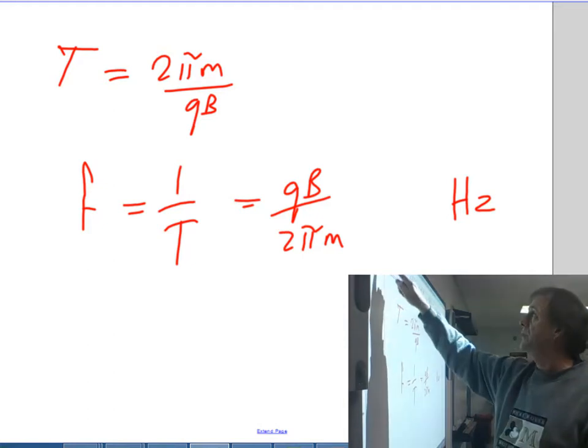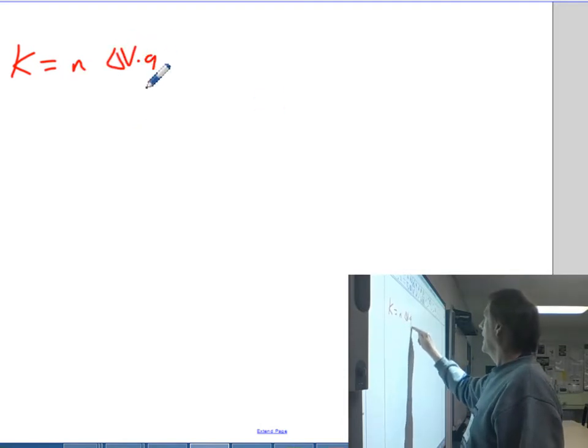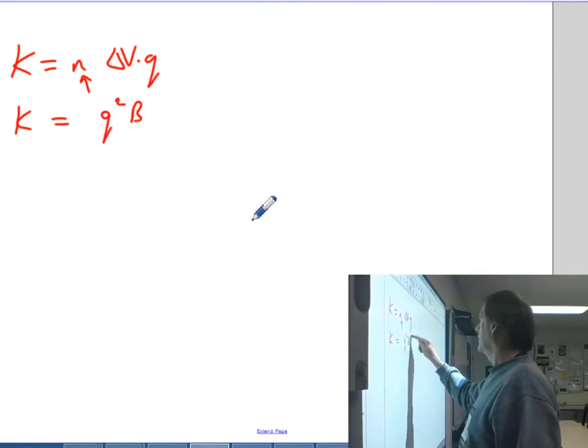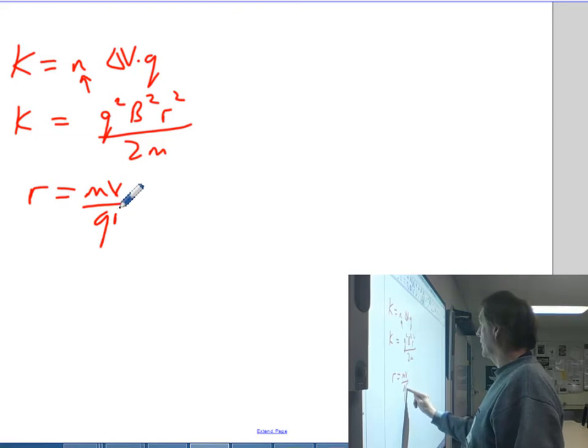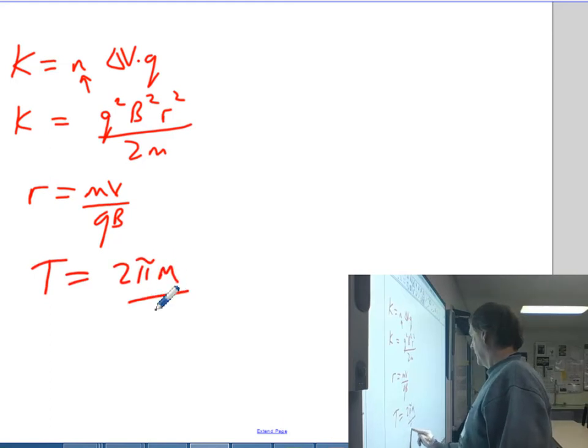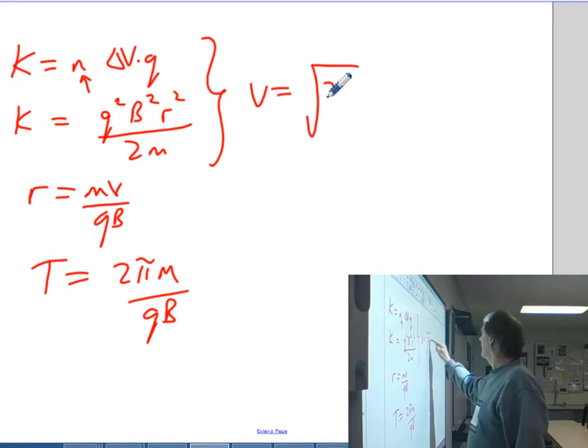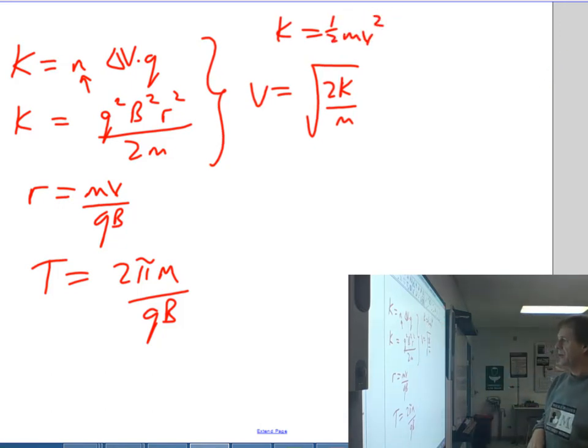So you've got quite a few formulas here. You can work out the kinetic energy at least by using n delta VQ where n is the number of crosses. You've got the formula q squared, b squared, r squared over 2m. That one's perfectly valid anywhere in any magnetic field by the way. And you've got one for the period, 2 pi m over qb. At any stage, you can work out the velocity by rearranging half mv squared to find the speed as it comes out. So there's some key things to be aware of.